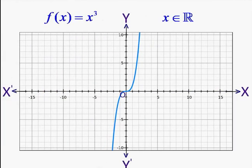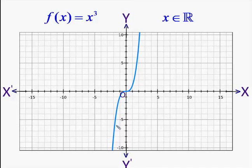Here is the graph for f(x) = x³. Observe that the values of f increase when the values of x are increased. Therefore, the function does not attain any maximum value. Similarly, the values of f decrease when the values of x are decreased, so f can be made as small as possible. Therefore the function will not attain a minimum value as well. For this function there is no maximum or minimum value.